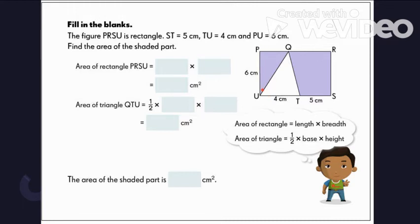Now, let us find the area of the shaded part. The first step is to determine the shapes that make up the composite figure. Here we can see clearly that we have a rectangle and a triangle inscribed in it. So, if we use the same strategy we used earlier, we can easily get the area of the shaded portion by simply subtracting the area of the triangle from the area of the rectangle. First, let us solve for the area of the rectangle.